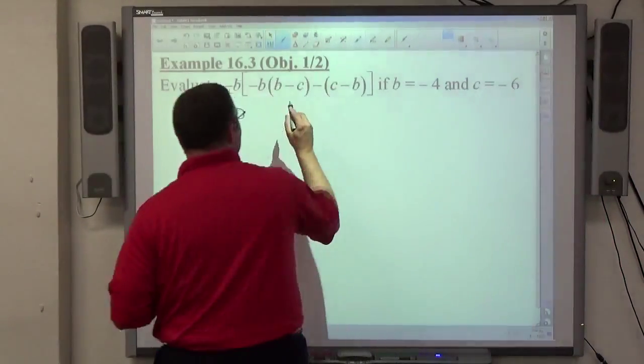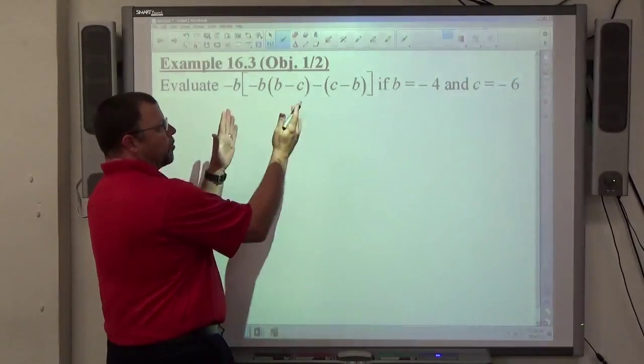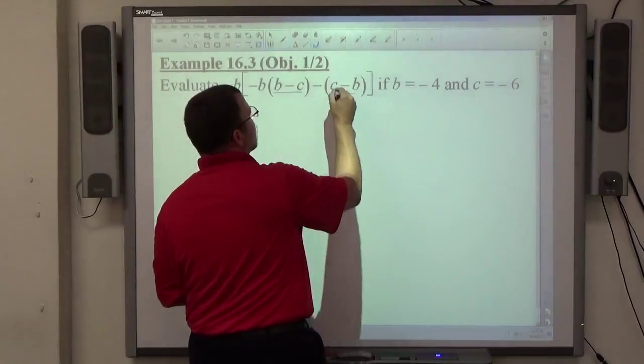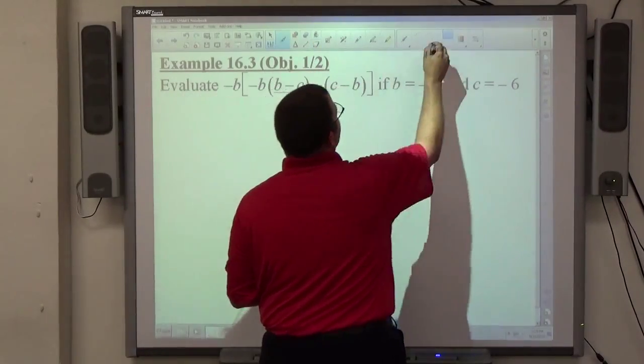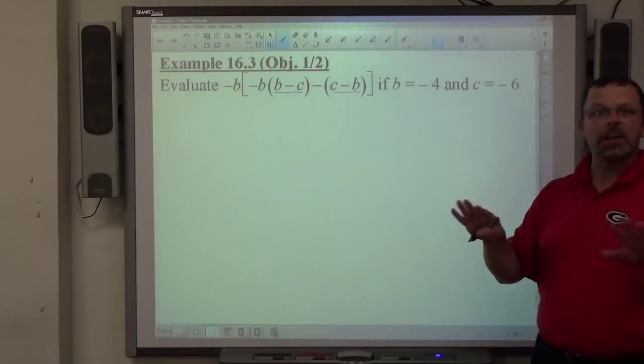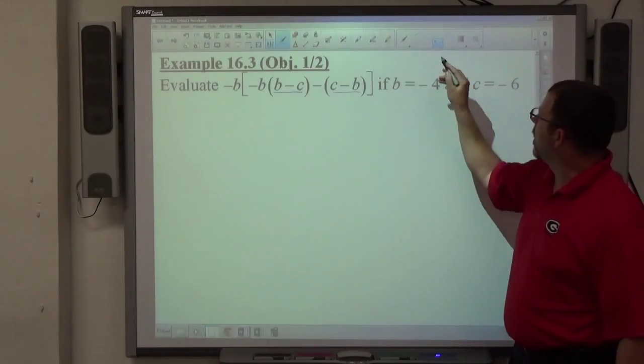What I want you to notice here is the innermost parentheses. I have b minus c and c minus b. Cross them out. Well, no, you can't cross them out because b minus c doesn't equal c minus b. They're opposite signs. It'd be nice if we could cross them out, but that's not possible.